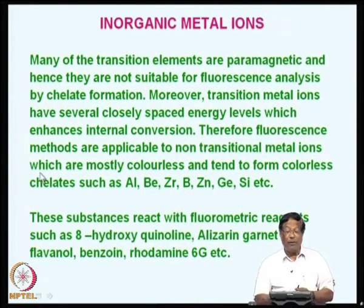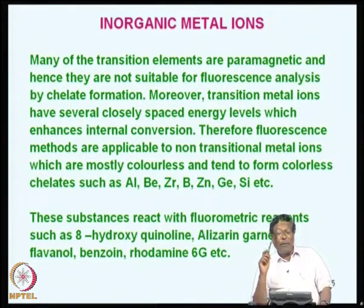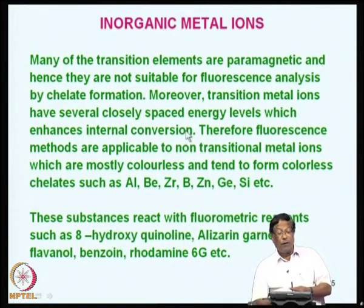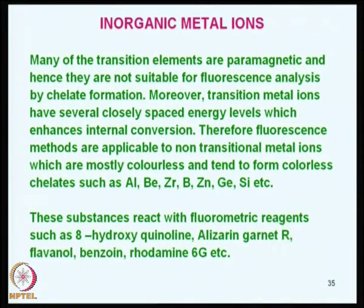Many of the transition elements are basically paramagnetic and hence they are not suitable for fluorescence. Diamagnetic substances are suitable for fluorescence, and paramagnetic substances do not form fluorescent species, not even by chelate formation. Moreover, transition metals have closely spaced energy levels, which enhances internal conversion. Therefore, fluorescence methods are applicable mostly to non-transition element metal ions, which are mostly colorless and also tend to form colorless chelates.